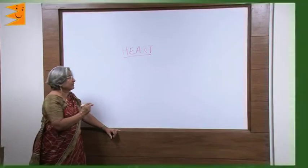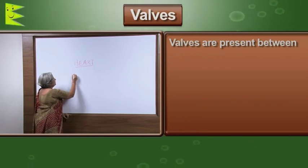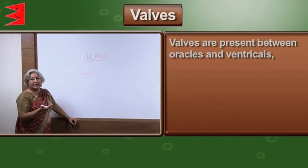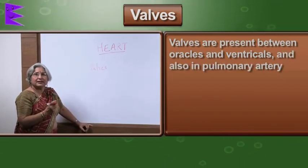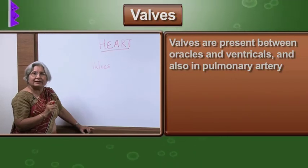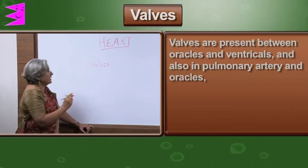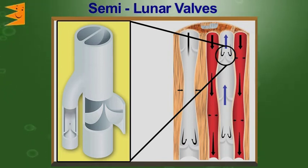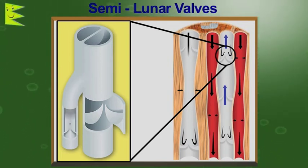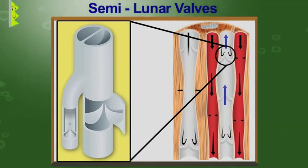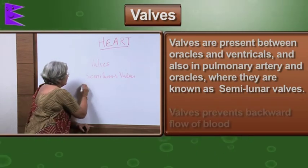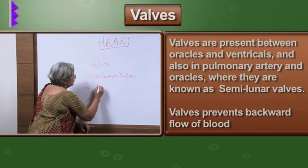Valves are not only present between the atria and ventricles; they are also present in the pulmonary artery and the aorta, where they are called semilunar valves. Wherever there are valves — whether in the veins or in the heart — their function is always to prevent backward flow of blood.